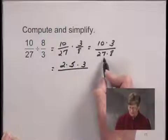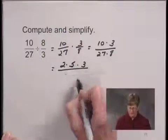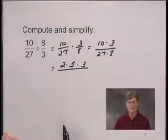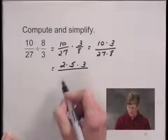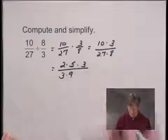In the denominator, 27 is 3 times 3 times 3, or I can just write it as 3 times 9, because I see that I just have a factor of 3 up here and no other factors of 3. So I'm writing 27 as 3 times 9.